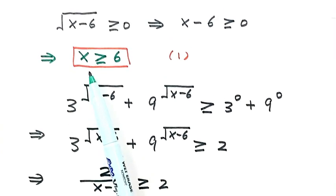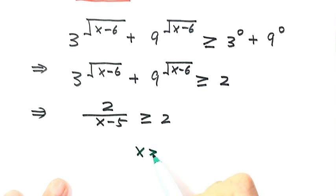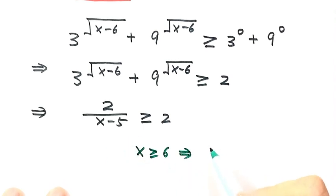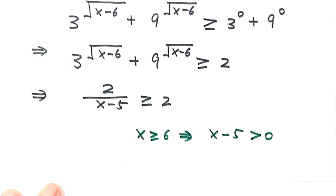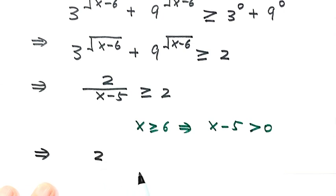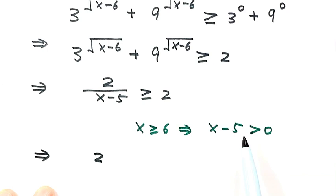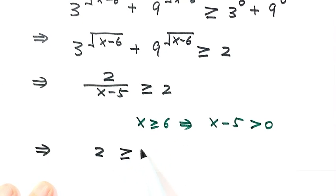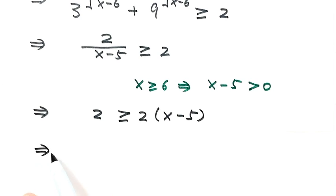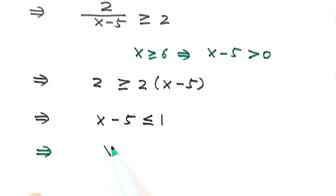Based on Result 1, x is bigger than or equal to 6, so x minus 5 is bigger than 0. Since x minus 5 is positive, we multiply both sides by x minus 5 and the inequality sign stays the same. The left-hand side becomes 2, and the right-hand side becomes 2 times (x minus 5). Cancelling the 2 from both sides gives x minus 5 less than or equal to 1, so x less than or equal to 6. We label this as Result 2.